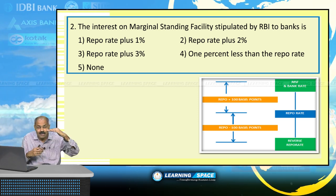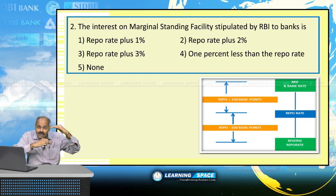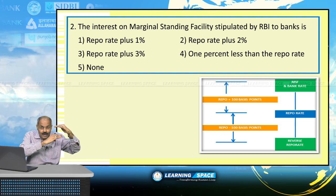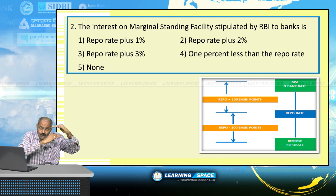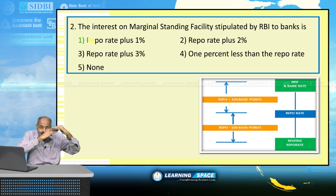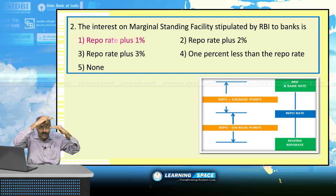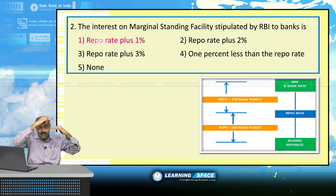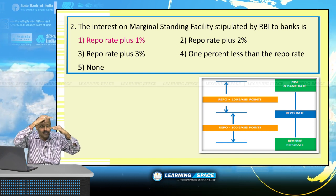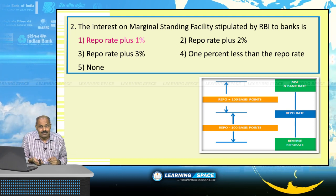In the monetary policy, repo rate will be announced and reverse repo will be 1% less. Repo and reverse repo put together is known as liquidity adjustment facility. Marginal standing facility interest rate is 1% higher than repo rate. Marginal standing facility as well as bank rate — these two interest rates are both 1% higher than repo rate.